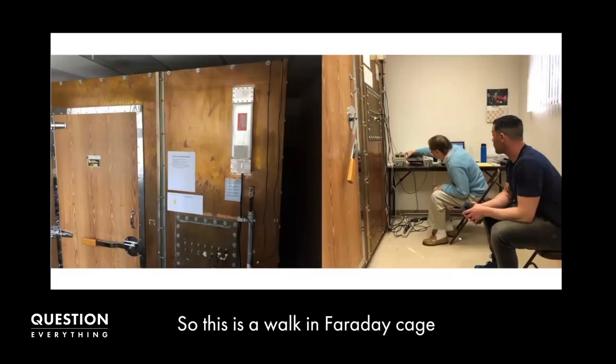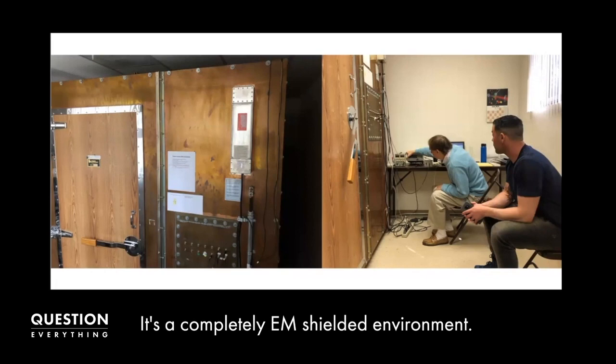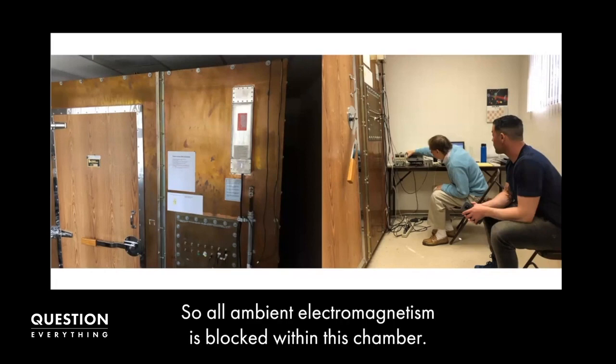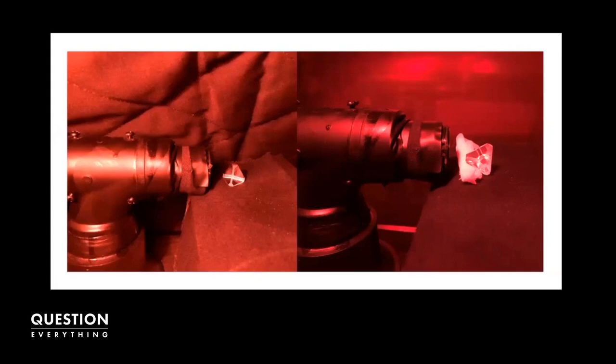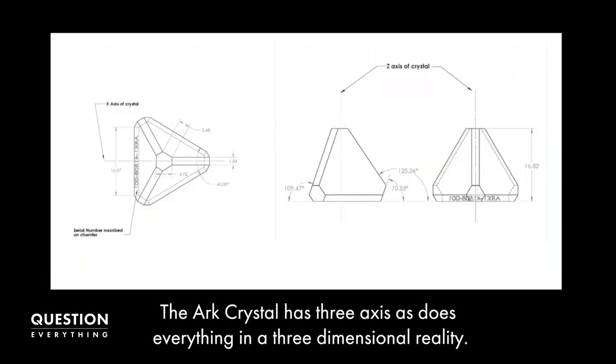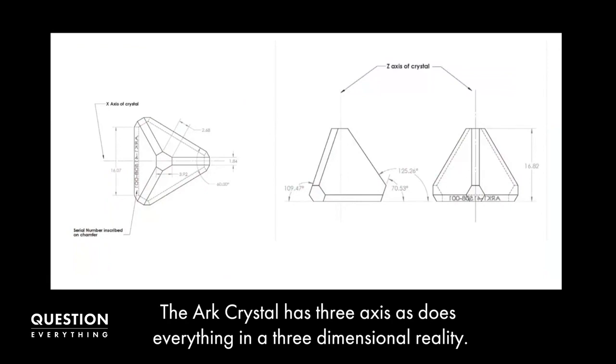This is a walk-in ferritic cage, a completely EM-shielded environment, so all ambient electromagnetism is blocked within this chamber. Within the chamber, there's a photo detector. The ARC crystal has three axes, as does everything in a three-dimensional reality.